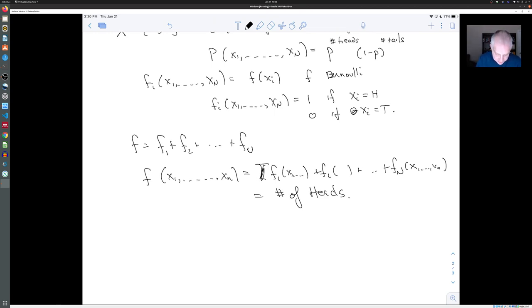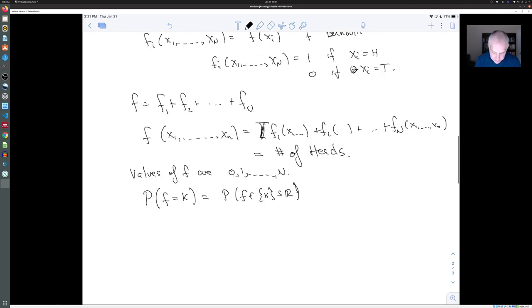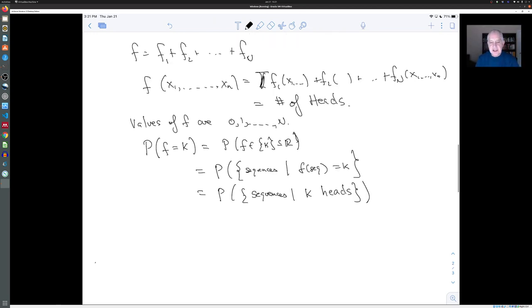Now, the possible values of f are zero, one, up to n, because the number of heads is somewhere between zero and n. What is the probability that f is equal to k? Well, put another way, this is the probability that f is in the set k, just sitting inside of R. And that's equal to the probability of the set of sequences such that f of that sequence is equal to k. But f of the sequence is the number of heads. So this is equal to the probability of the set of sequences such that they have k heads.